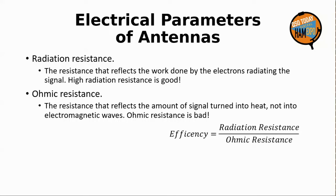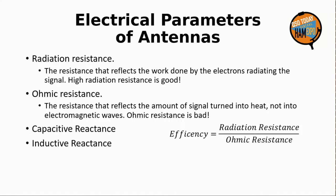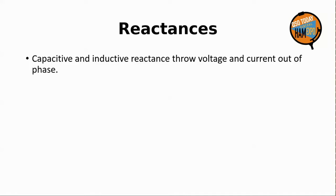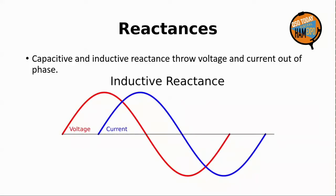Then there's the antenna's capacitive and inductive reactances. We need to take a brief detour here. Capacitive and inductive reactance throw voltage and current out of phase with each other. When a current starts to pass through a coil, the coil resists the flow of that current — voltage increases because the coil acts like a resistor at that point, but current does not pass. We end up with a graph where voltage is leading the current. We could also say the current is delayed relative to the voltage.